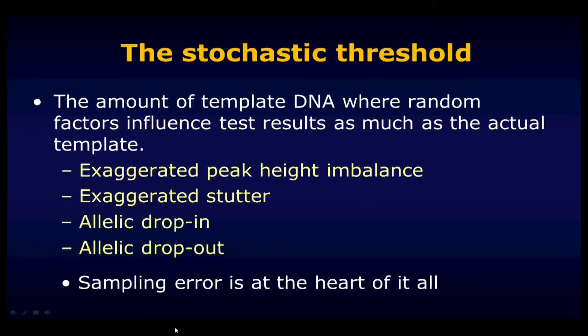At the end of the day, all of these stochastic effects are due ultimately to sampling errors — due to the fact that we're reaching into a bag of beans and pulling out too few beans to make a good assessment of what kind of beans are in the bag. Are they all black? Could they be black mixed with white? Could there be some red beans in there? We all appreciate intuitively that when you get too small a sample, you may not get a good indication of what's associated with the sample in the first place.